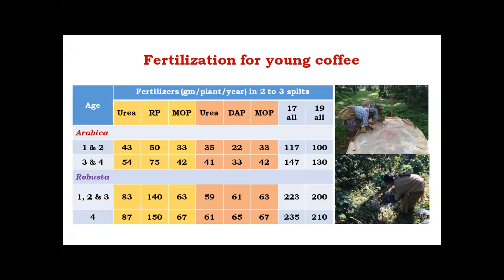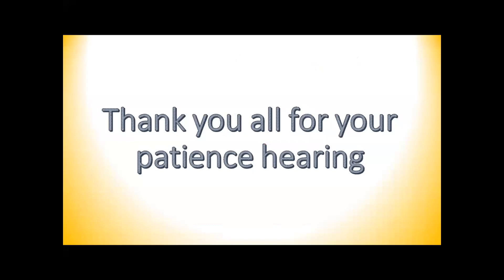When using DAP, the urea quantity is reduced because DAP contains both nitrogen and phosphorus. In that case, 35 grams urea, 22 grams DAP, and 33 grams MOP is sufficient for young coffee nutrition. When applying the 17 arc compound fertilizer, which contains all major NPK nutrients, it can be given at 117 to 120 grams per plant per year. For detailed information on fertilizer recommendations for young coffee, you can contact us by email or phone. That concludes today's webinar on planting and aftercare in coffee.